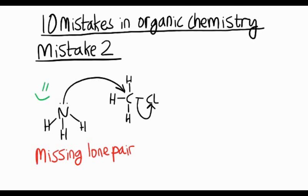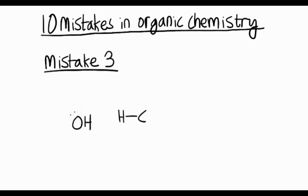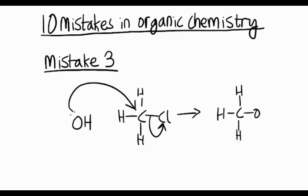Let's have a look at mistake 3. We'll draw a mechanism for this one and look carefully so you can see the problem. We'll react a hydroxide ion with chloromethane, show the curly arrows, and the product gives you methanol and a chloride ion. Can you see the mistake? We're missing the charge on the hydroxide ion. Hydroxide ions have a minus 1 charge.